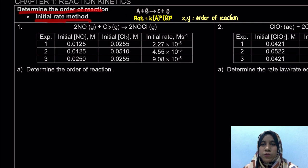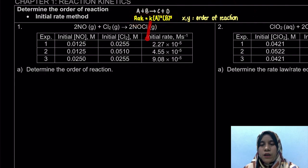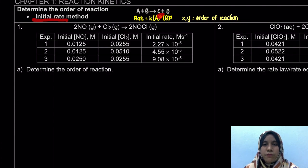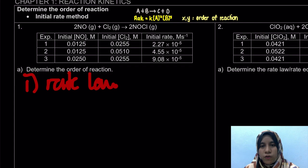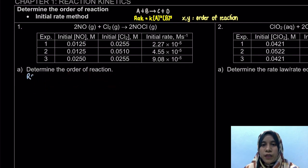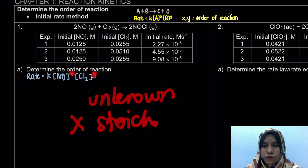So what is the initial rate? By the initial rate method, the experimental values are given in a table. For the equation, we have to write down the rate law: rate is equal to k, the rate constant, and then the concentration of the reactant raised to some power. That power is the order of the reaction, which can be found using the initial rate method. Let's look at question 1A - determine the order of reaction. Before we determine x and y, we have to write down the rate law first. Rate is equal to k, concentration of NO raised to the power of x, and Cl2 raised to the power of y. It must be your unknown - it does not depend on our stoichiometry.